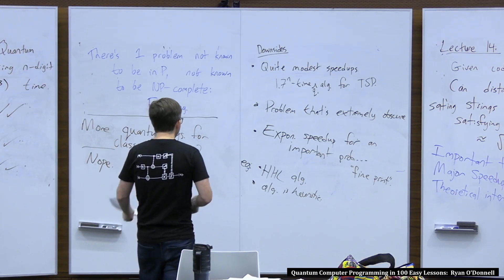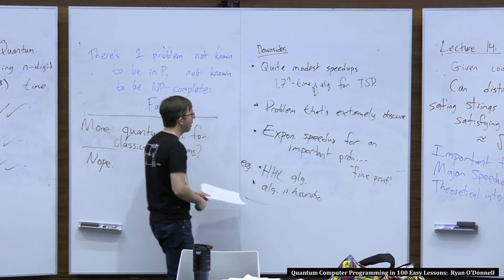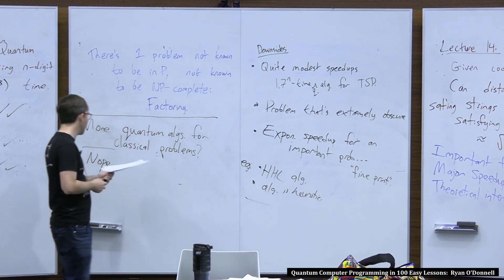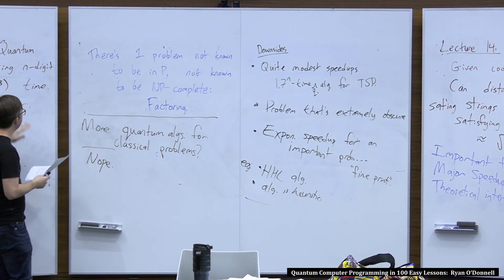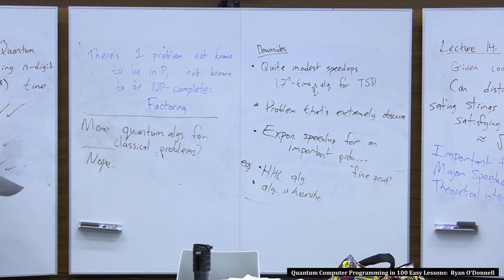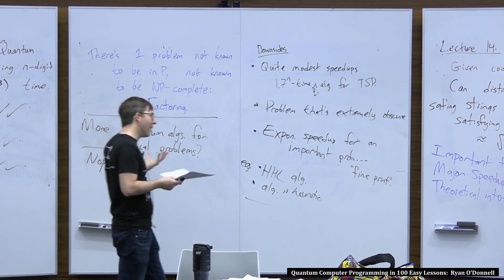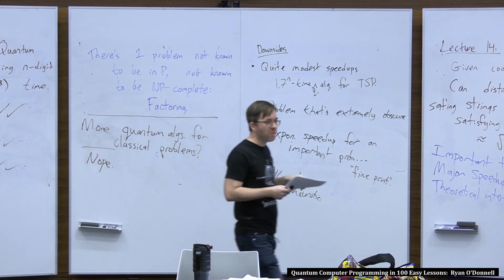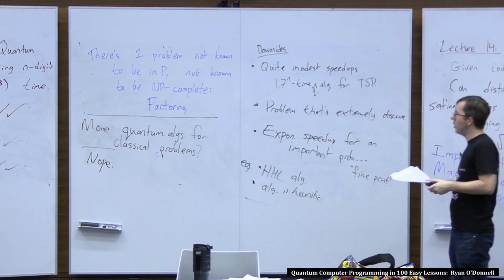Or maybe they don't yet exist — that's another possibility. It's been maybe 30 years since we had a really compelling quantum algorithm for a classical problem. But maybe we'll look up tomorrow and somebody will think of a new one. It could happen. Keep the dream alive.